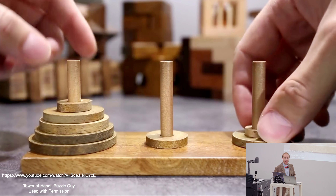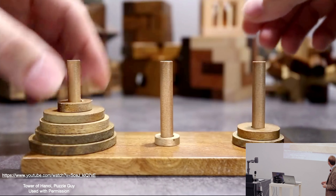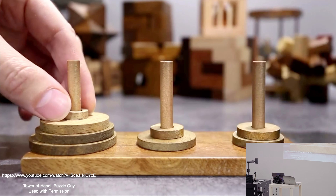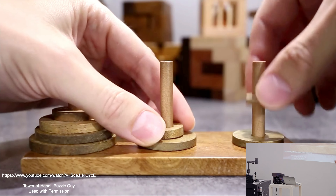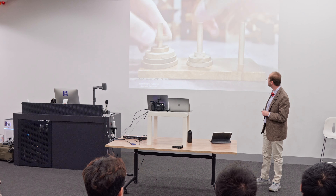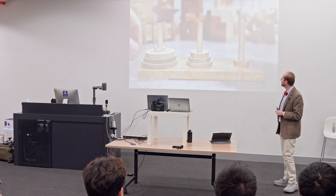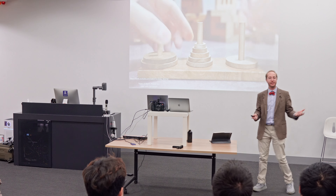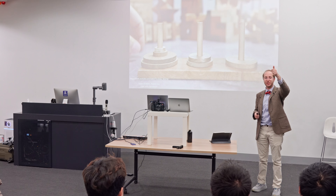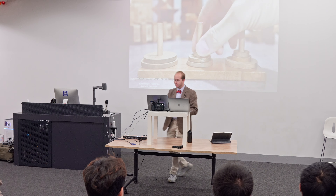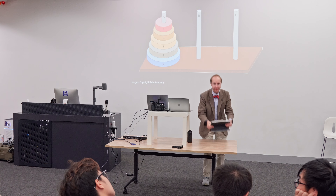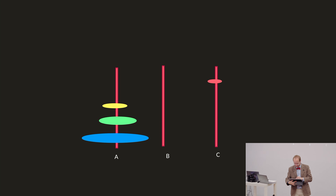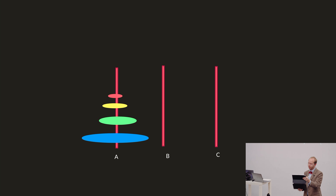This is also a children's puzzle that many of you have probably played with. The goal is to move all the discs from their starting pole to the next pole, while ensuring at no time is a bigger disc on top of a smaller disc — always in order from largest to smallest. Here you can see someone moving the pieces around and solving the puzzle. Let's do a demo on the iPad — our goal is to move all the discs from A to B.